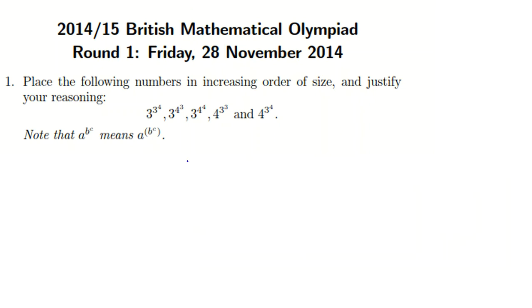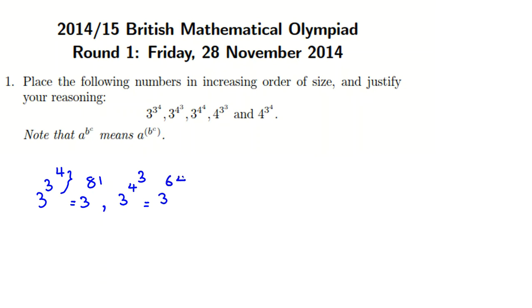So here, if you want to solve 3 to the 3 to the 4, by proper rules, you should calculate the inner exponent first. 3 to the 4 is 81, so the first number is 3 to the 81. The next number, 3 to the 4 to the 3: 4 to the 3 is 64, so that is 3 to the 64. The next one, 3 to the 4 to the 4: we need to calculate 4 to the 4.